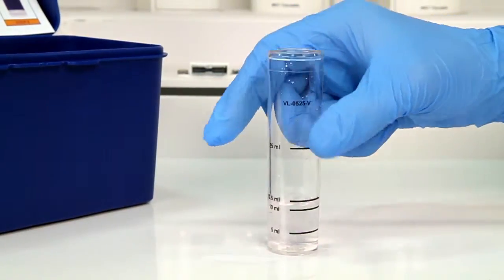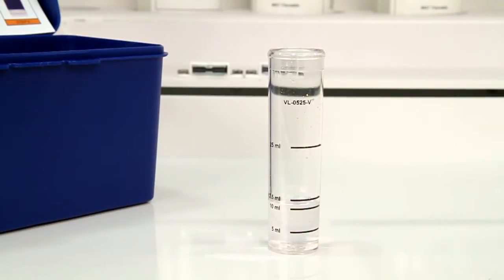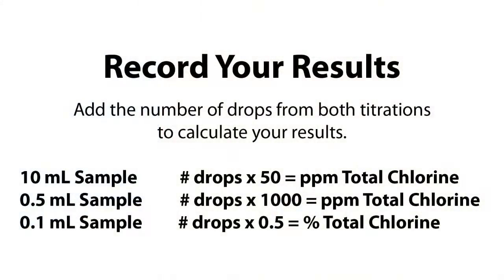Add the number of drops from this titration to the number of drops from the first titration. Multiply the total number of drops by your chosen equivalency factor to determine the parts per million total chlorine.